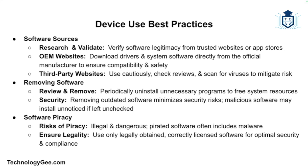It is essential to download software from legitimate sources to avoid malicious or compromised software. Research and validate your sources before downloading any software — ensure it comes from a trusted website or application store. For OEM websites, or the original equipment manufacturer, always download device drivers or system software from the official manufacturer's website to avoid compatibility issues or malware. Be cautious with third-party websites — ensure they are reputable by checking reviews and using virus scanners.